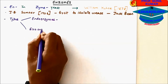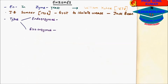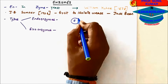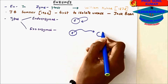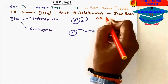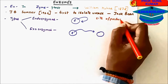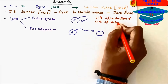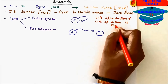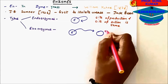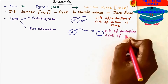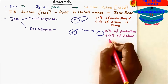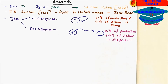When we talk about types of enzymes, there are basically two types: endoenzyme and exoenzyme. Endoenzyme means the site of production and site of action is the same. In exoenzyme, the site of production and site of action is different.